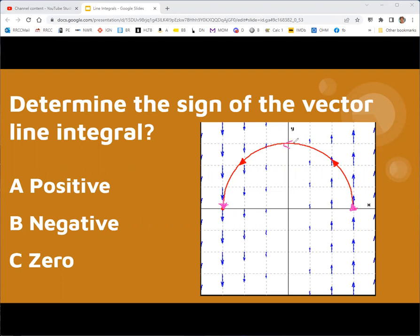And then on the diagonal, again, you know, you could break this up into a part that's going with the curve, and that would give you positive, and then a part that's orthogonal, and that would give you zero. So you're going to get a positive vector line integral in this situation.